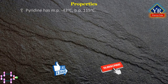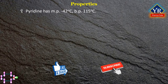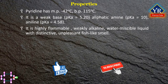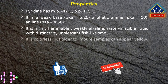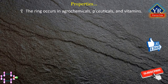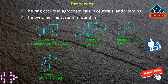Properties of pyridine. Anhydrous pyridine has a melting point of minus 42 degrees centigrade and a boiling point of 115 degrees centigrade. The pyridinium ion is isoelectronic with benzene. It is a weak base having a pKa of 5.20, compared to aliphatic amine pKa of 10 and aniline pKa of 4.58. It is highly flammable, weakly alkaline, and a water-miscible liquid with a distinctive unpleasant fish-like smell. It is colorless, but older or impure samples can appear yellow. It is poisonous and inhalation of its vapor causes damage to the nervous system. The pyridine ring occurs in many important compounds including agrochemicals, pharmaceuticals, and vitamins. Here are the structures that possess the pyridine ring.